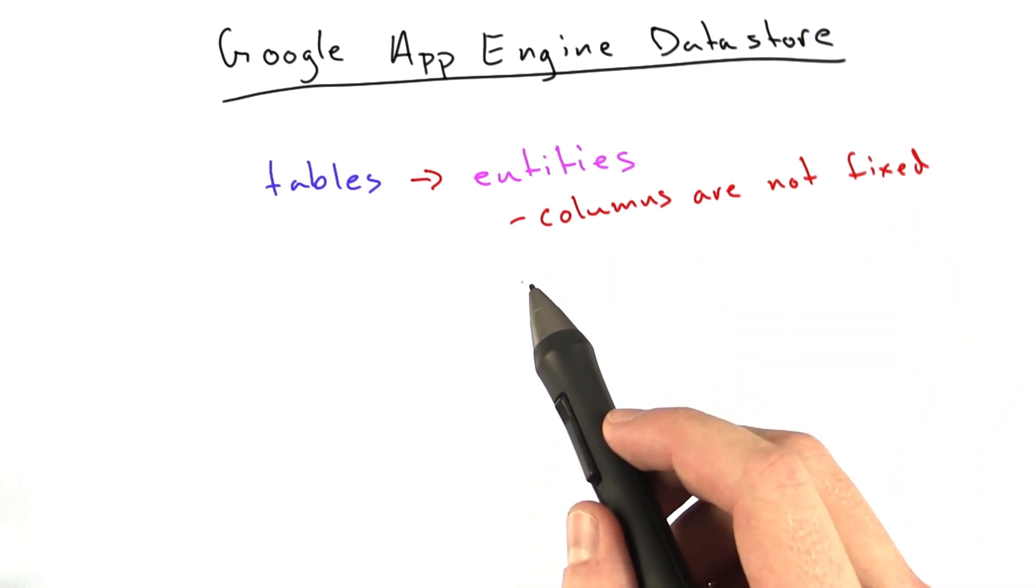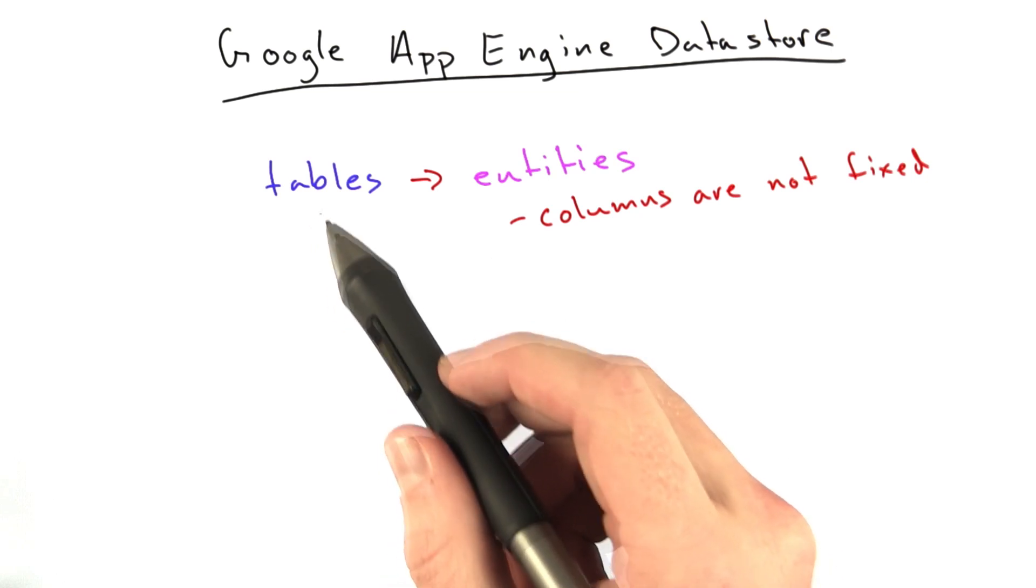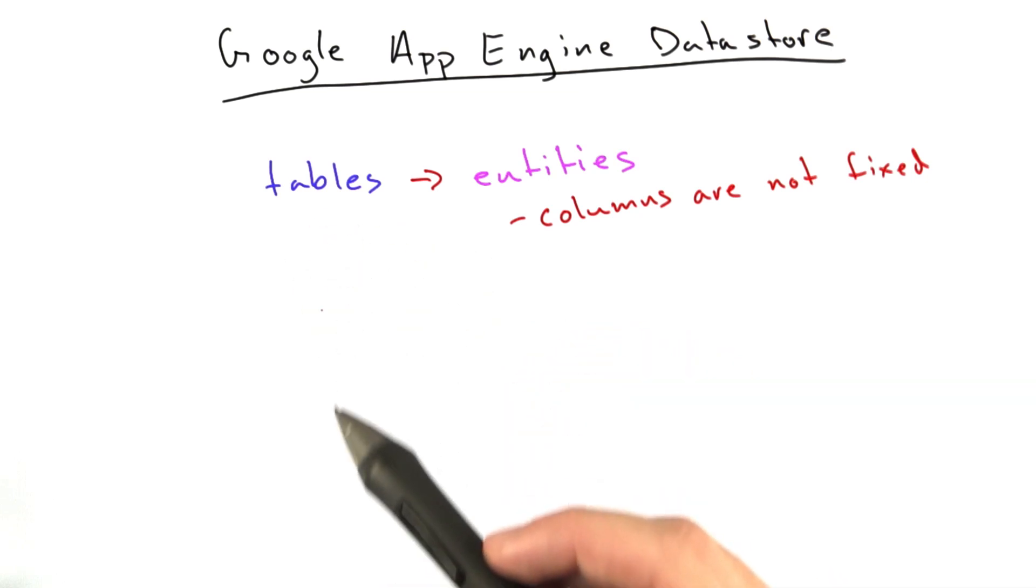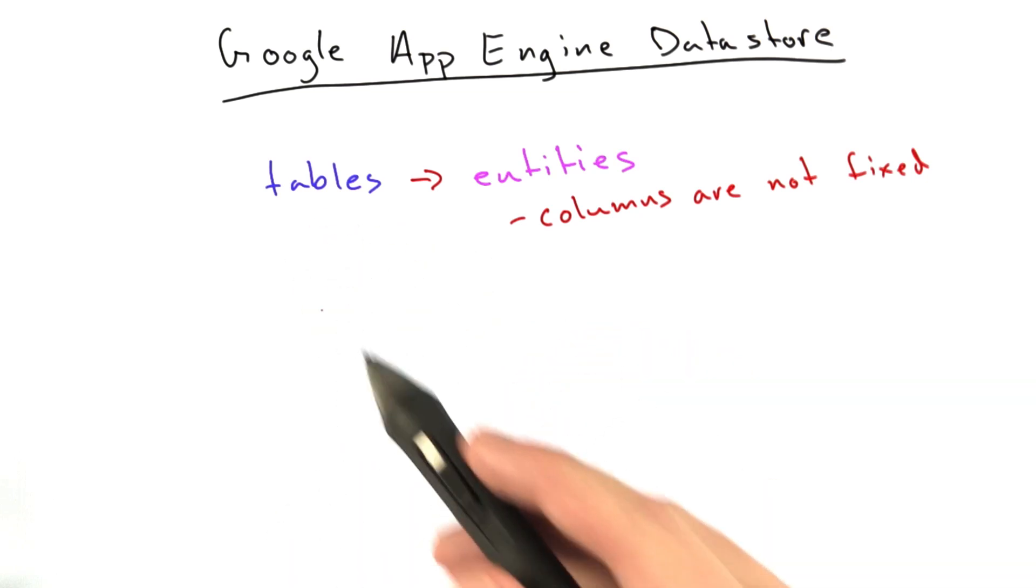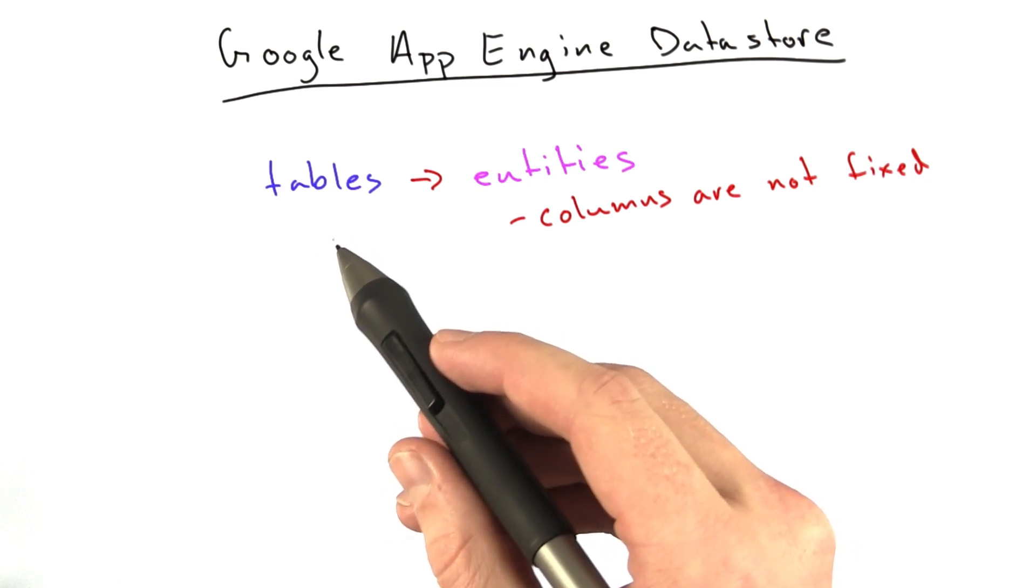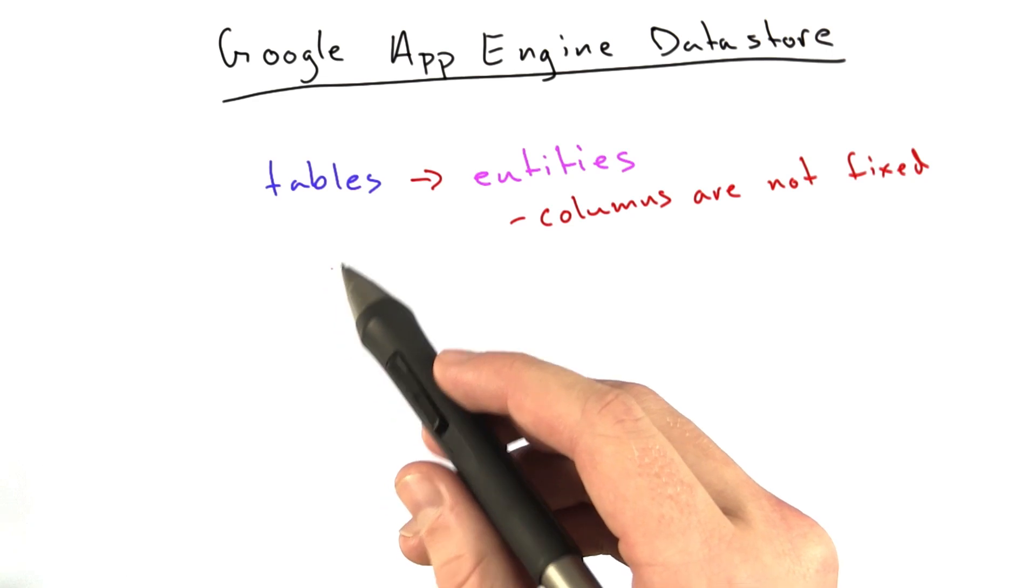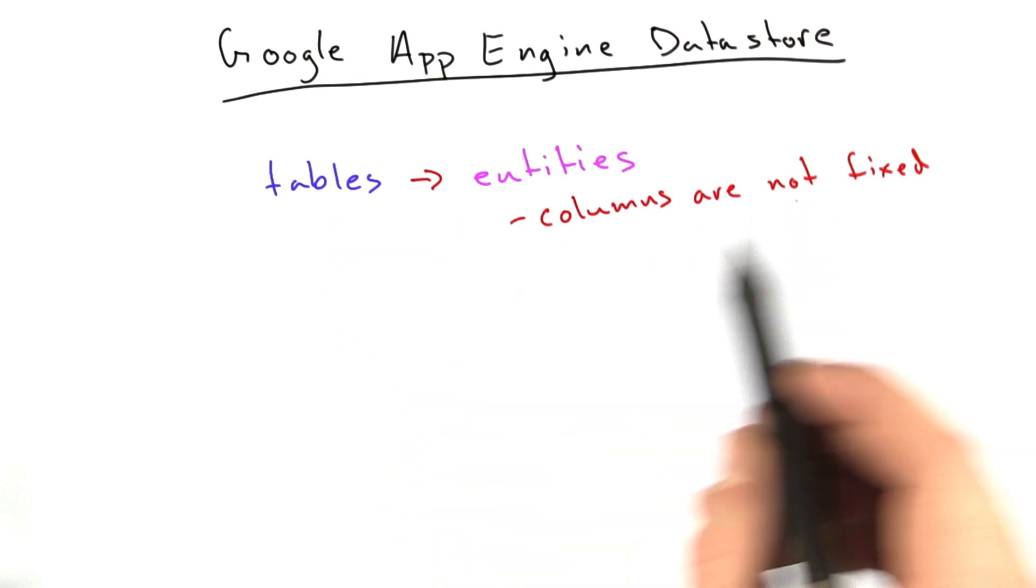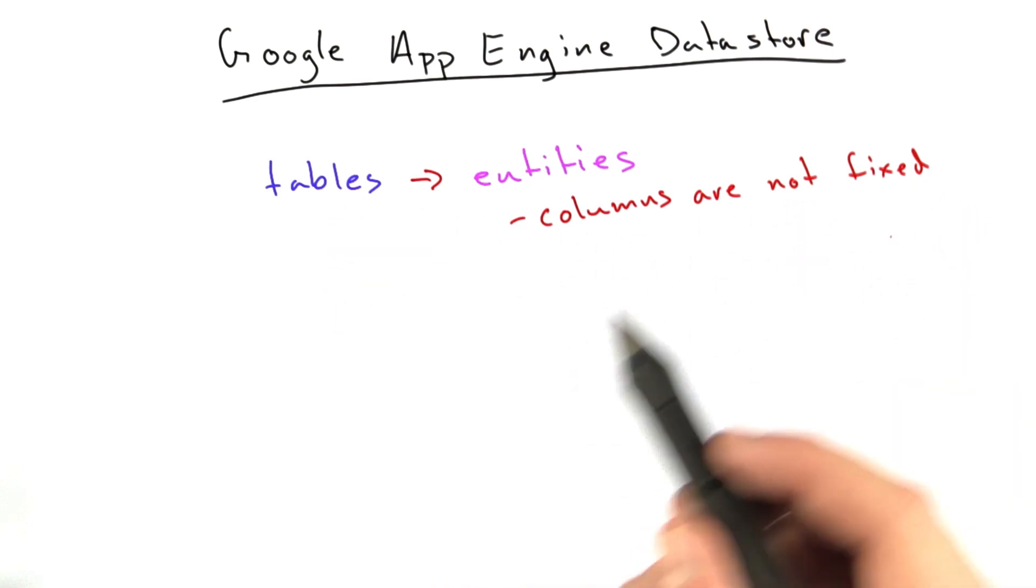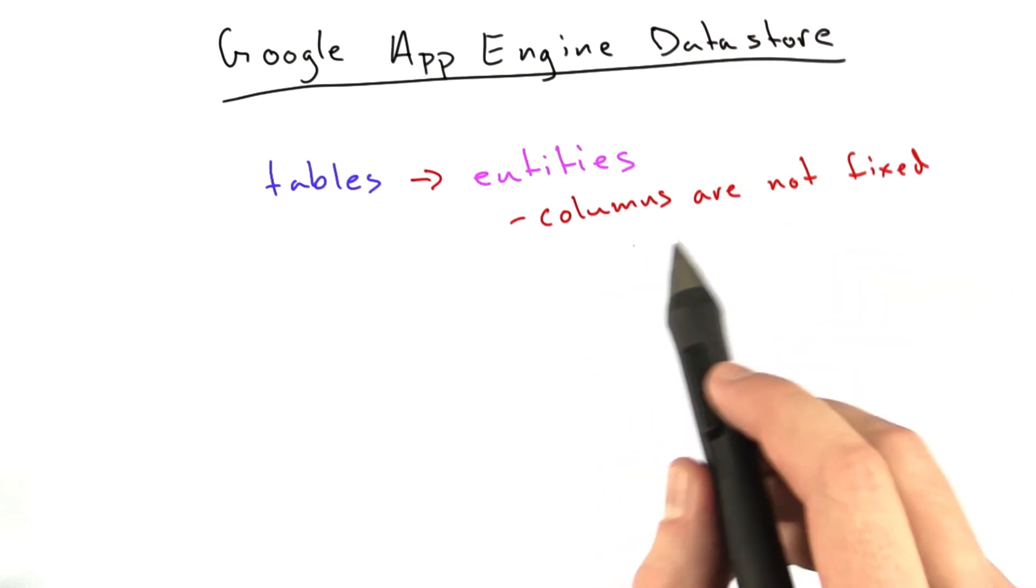This makes development actually a lot easier. When you're working with tables, often you build your table, add a feature, and then realize you needed another column. Sometimes adding a column to a database with millions of rows can be quite troublesome. In Google App Engine, we don't have that problem. You can have whatever columns you want and actually change the columns while you're developing. It's very handy.